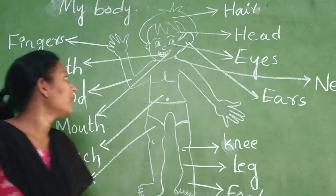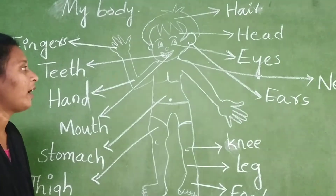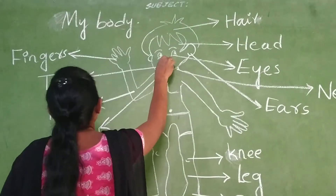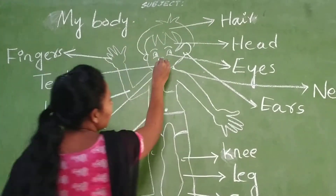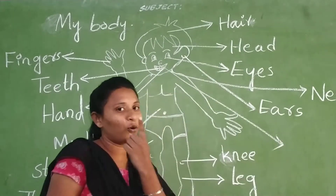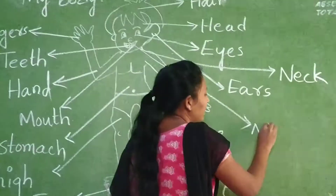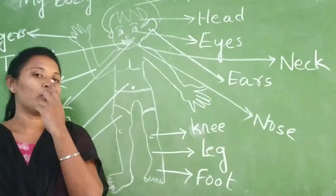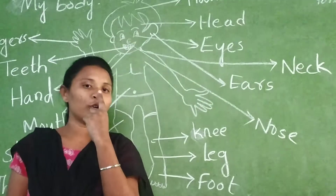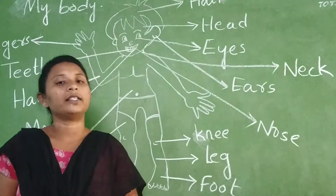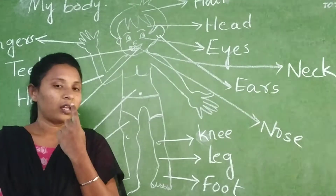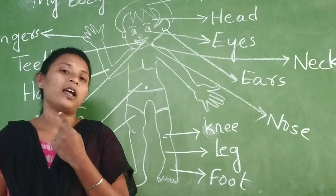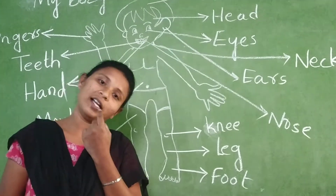I forgot to tell you one more important body part — that is nose. What is it, children? Nose. With this nose we can smell. And tongue — what is this? Tongue. We can taste with our tongue.